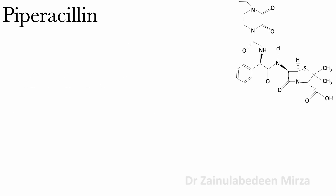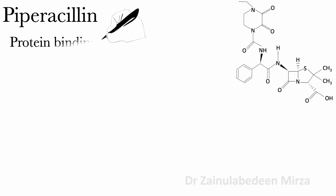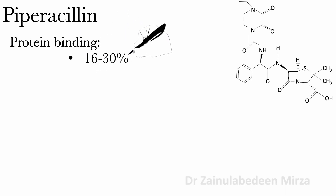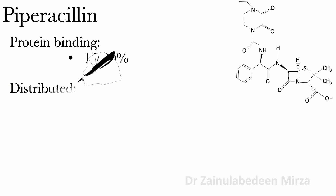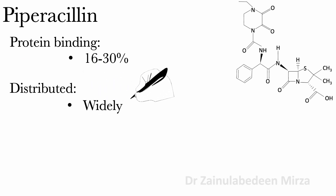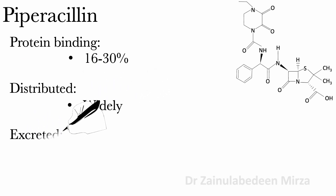Protein binding of Piperacillin is about 16 to 30 percent, and it is widely distributed. Piperacillin is excreted in urine.